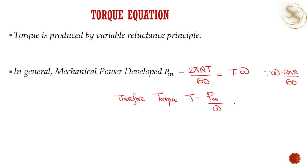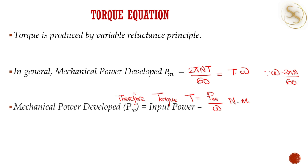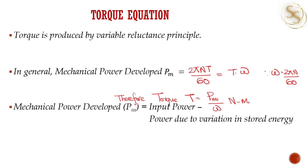In order to obtain the torque equation, we need to find the mechanical power developed by the machine. The mechanical power developed can be obtained from the input power and the power due to variation in stored energy. It is expressed as input power minus power due to variation in stored energy. We will find each one by one — first the input power, then the power due to variation in stored energy.